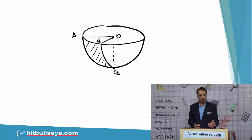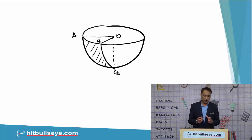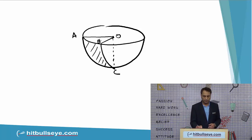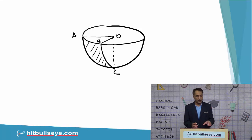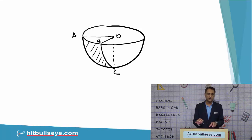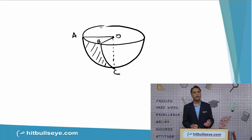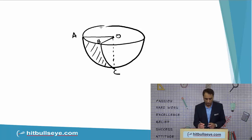Looking at this quadrant more carefully, it has four surfaces: three cut surfaces and one uncut surface. Surface ABC is the uncut surface; the other three — BOC, ABO, and AOC — are the cut surfaces. Each cut surface is one-fourth of a circle. For example, surface AOB is one-fourth of its circle, so the area of one such cut surface is pi r squared over 4. With three such surfaces, the total cut surface area is 3 pi r squared over 4.